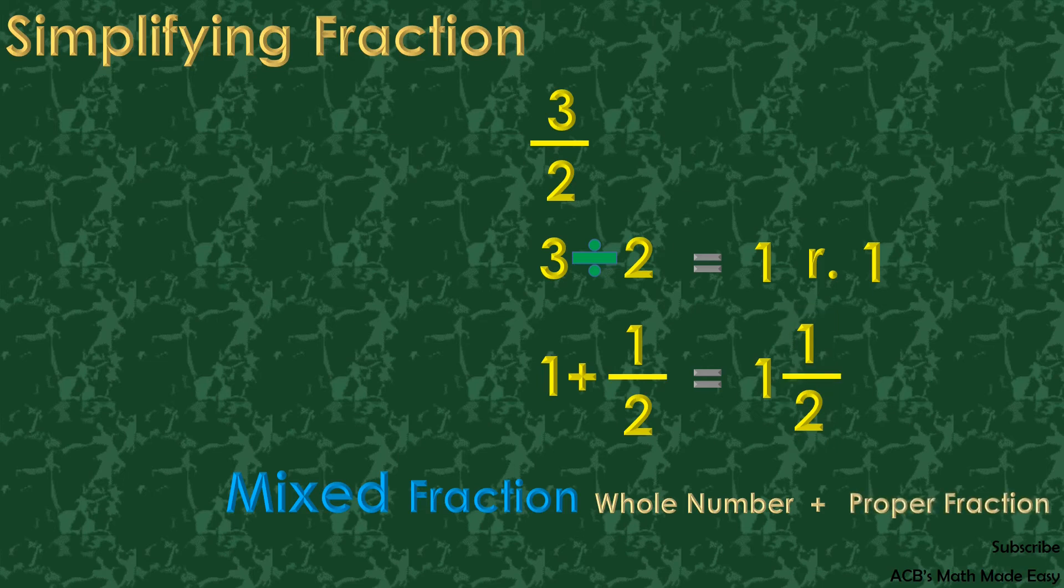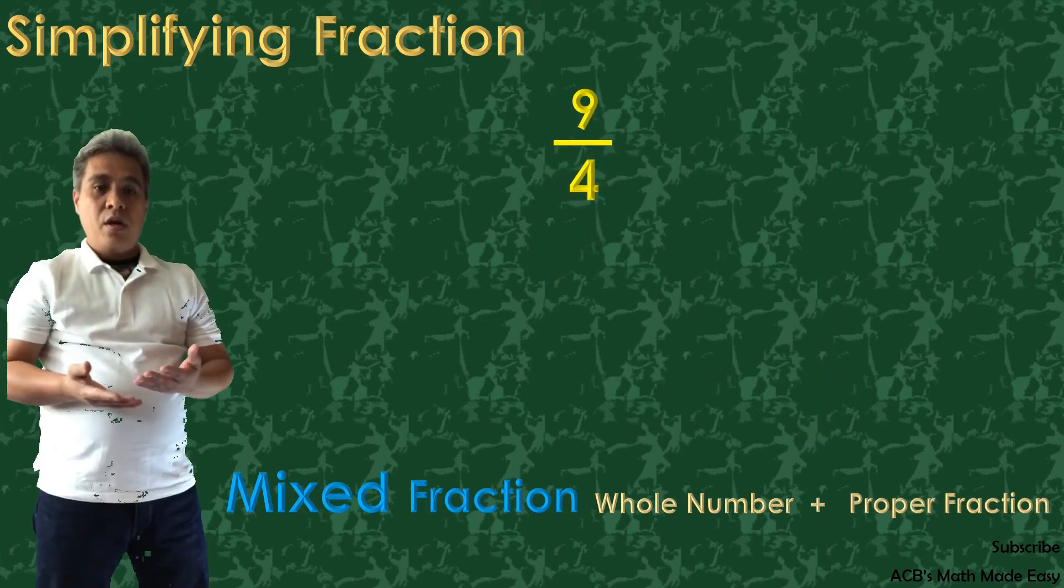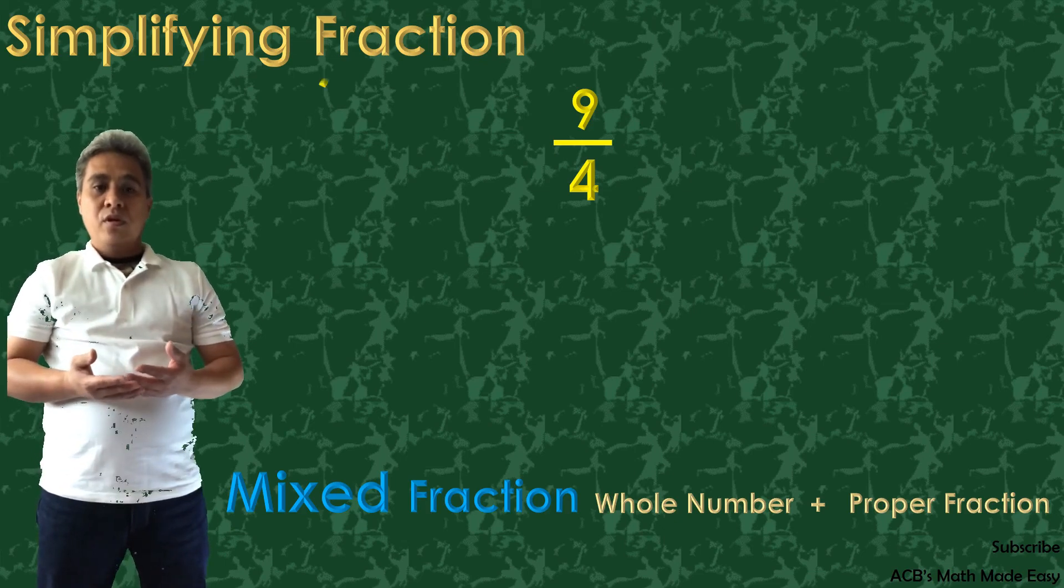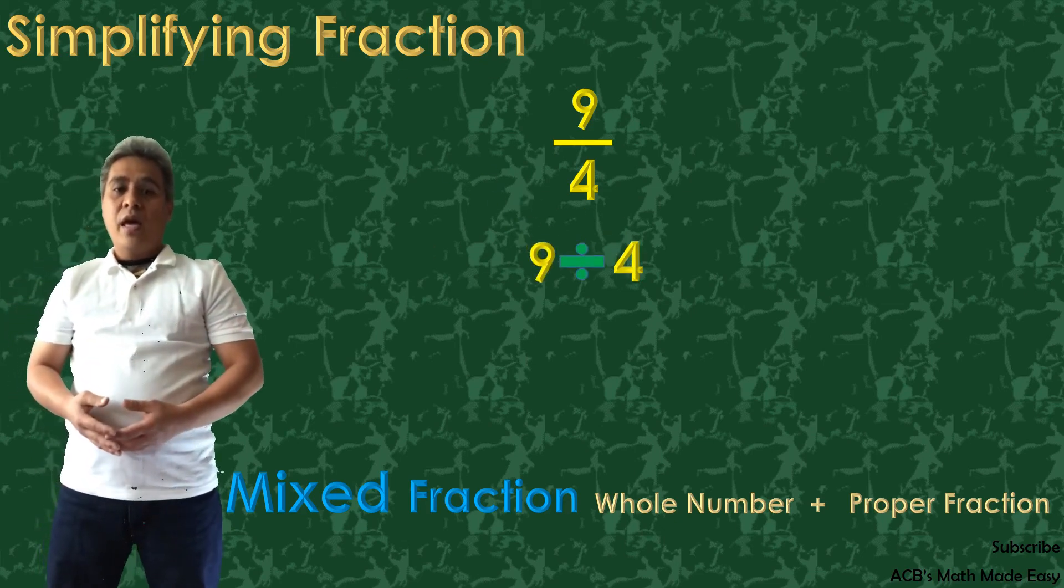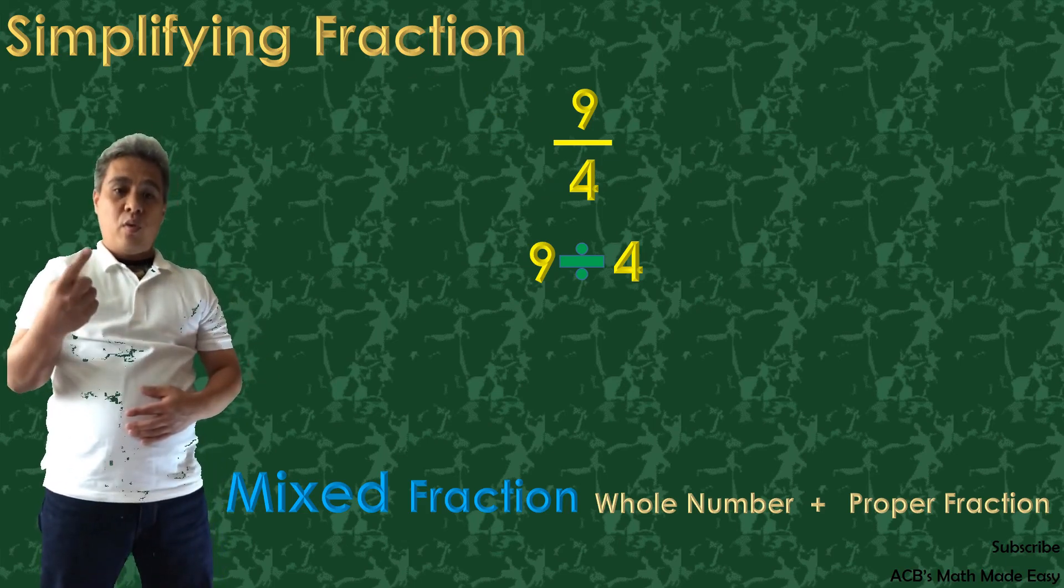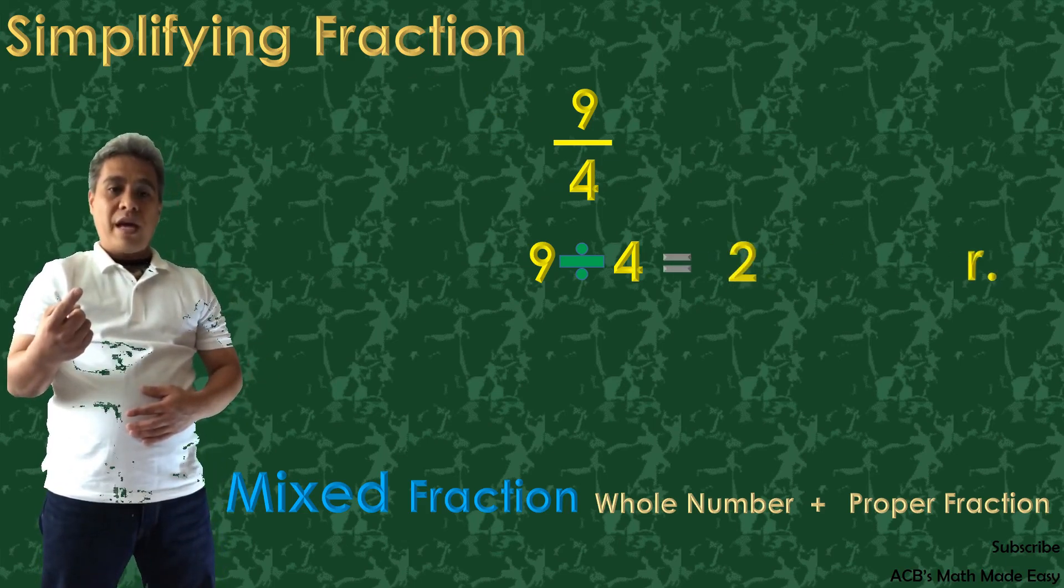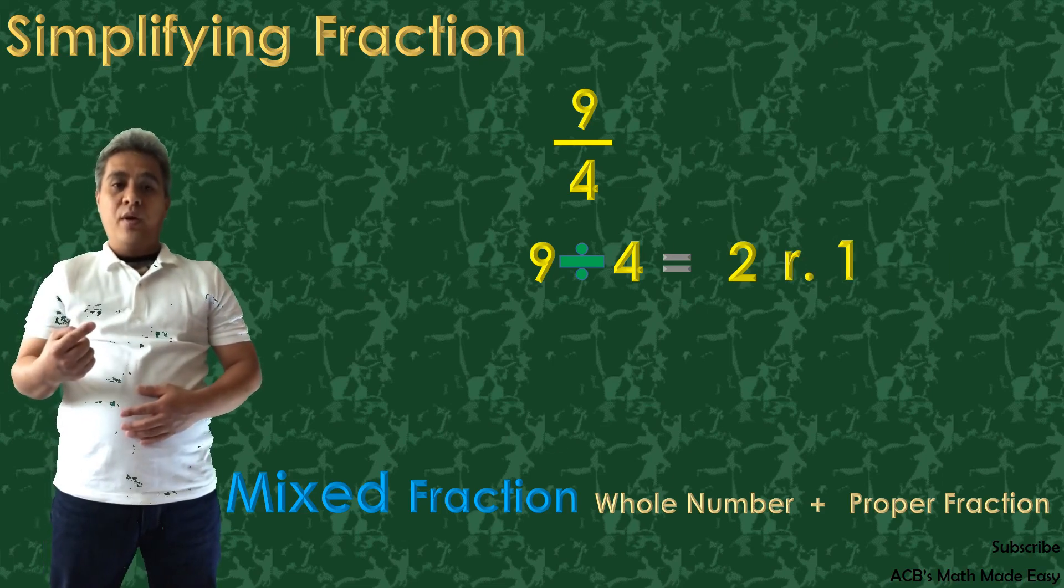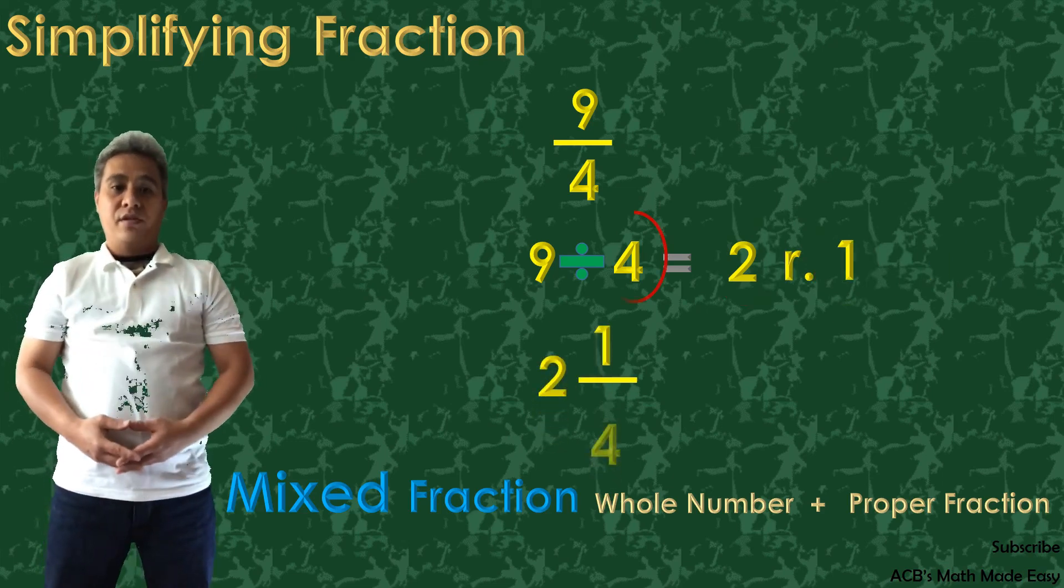We will simplify another example, 9 over 4. We write 9 over 4 to 9 divided by 4. And you will get an answer of 2 remainder 1. We write it to 2 and 1/4. And this is our answer.